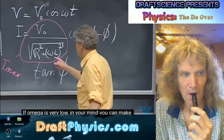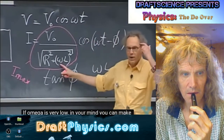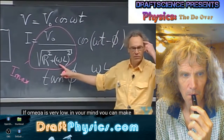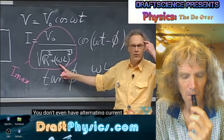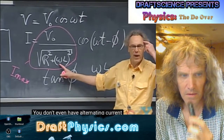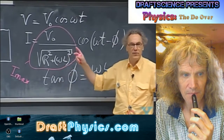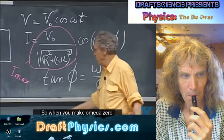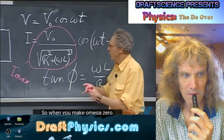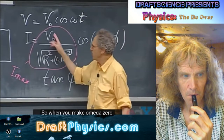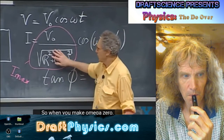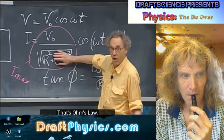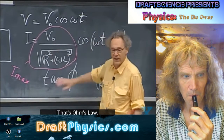If omega is very low — you can make omega zero — you don't even have alternating current. When omega is zero, you have DC, direct current. So when you make omega zero, you simply get I equals V0 divided by R — Ohm's law. That's obvious.